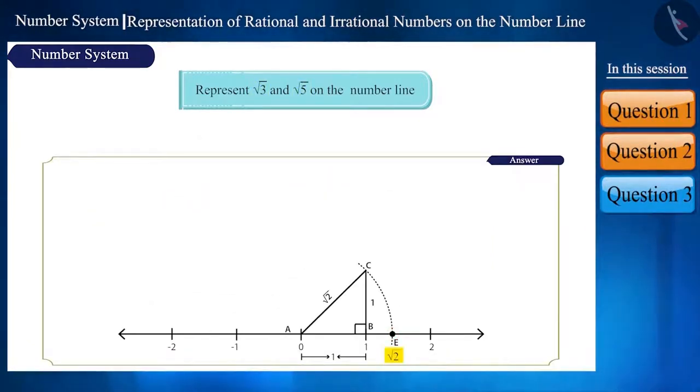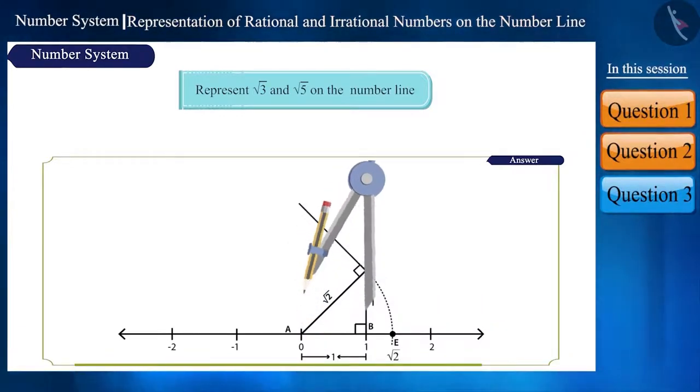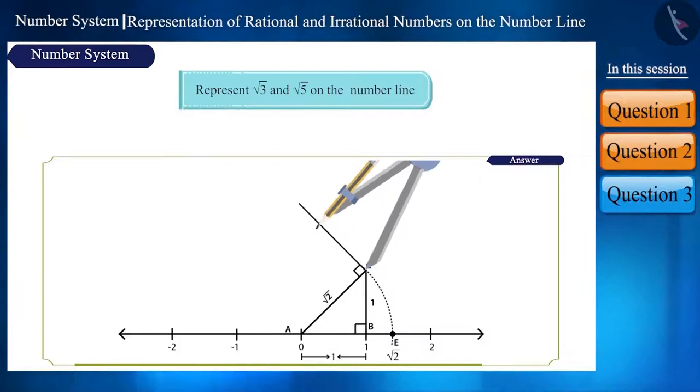Here, point E represents root 2. We will now construct a perpendicular on line AC. Now measure the distance of one unit using a compass and draw an arc from point C on the perpendicular which cuts it at point F.